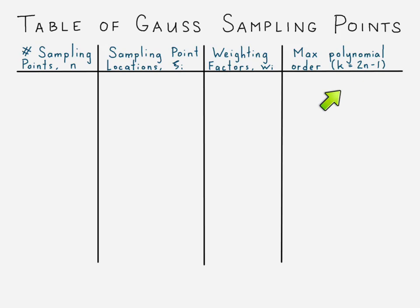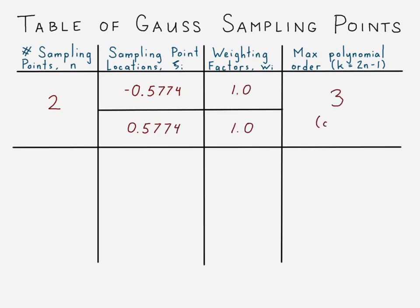And what is the max order of polynomial that can be solved. So if you want two sampling points, the sampling points turn out to be at plus and minus 1 over square root of 3. The weighting factors are 1.0 for each, and the max polynomial that I can solve is 3.